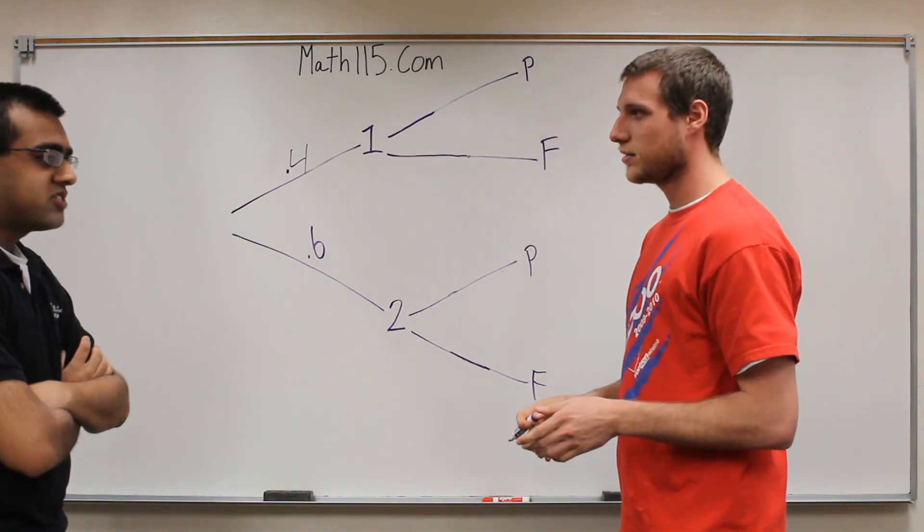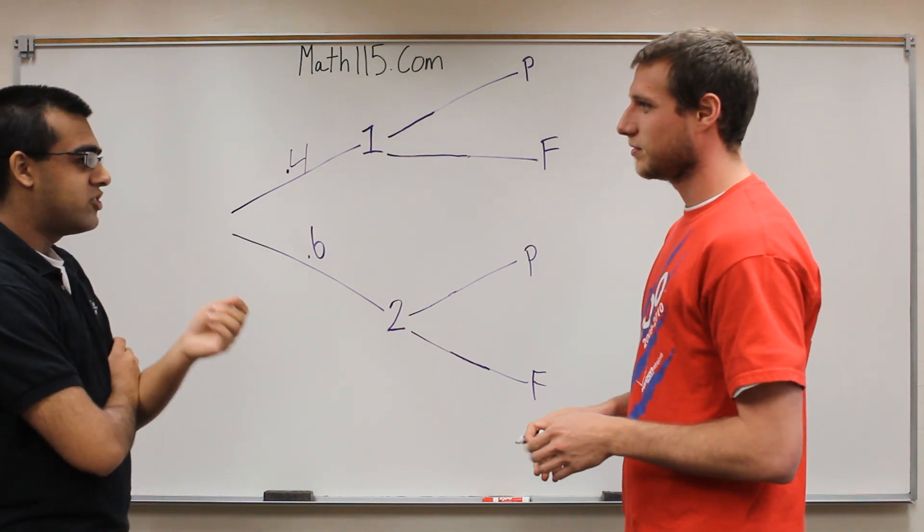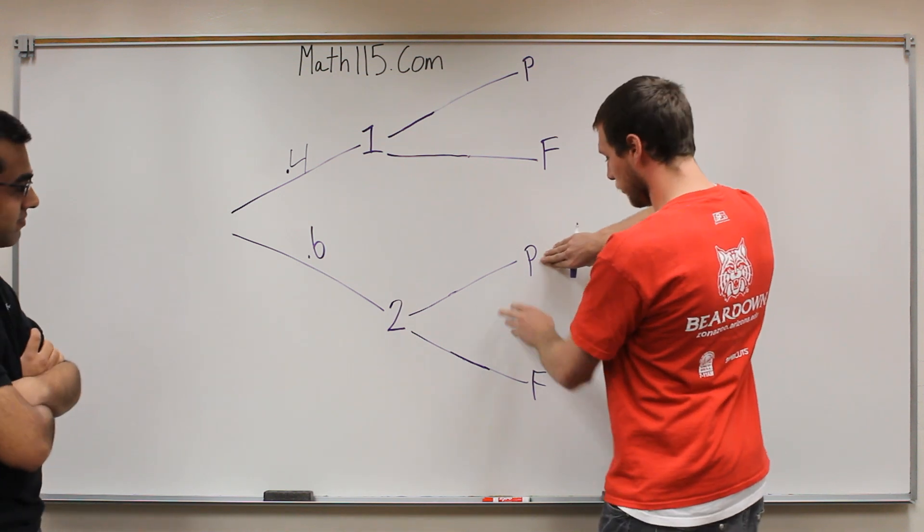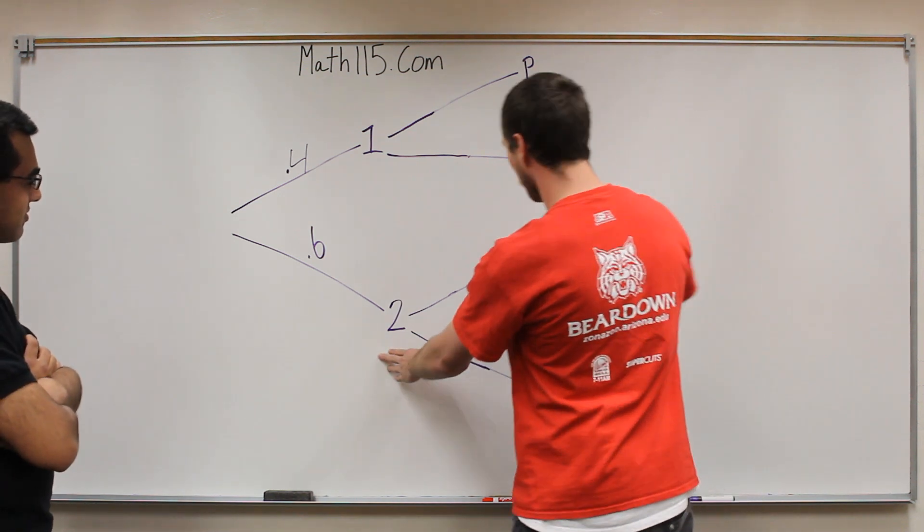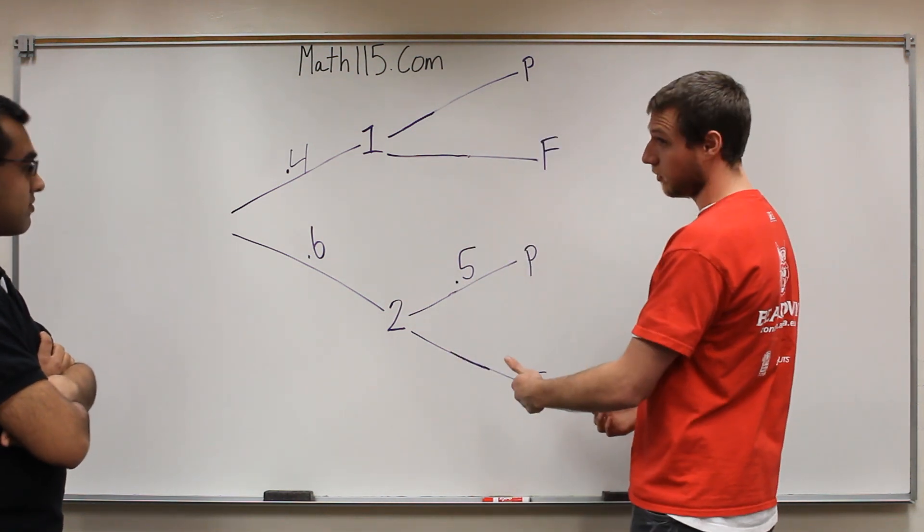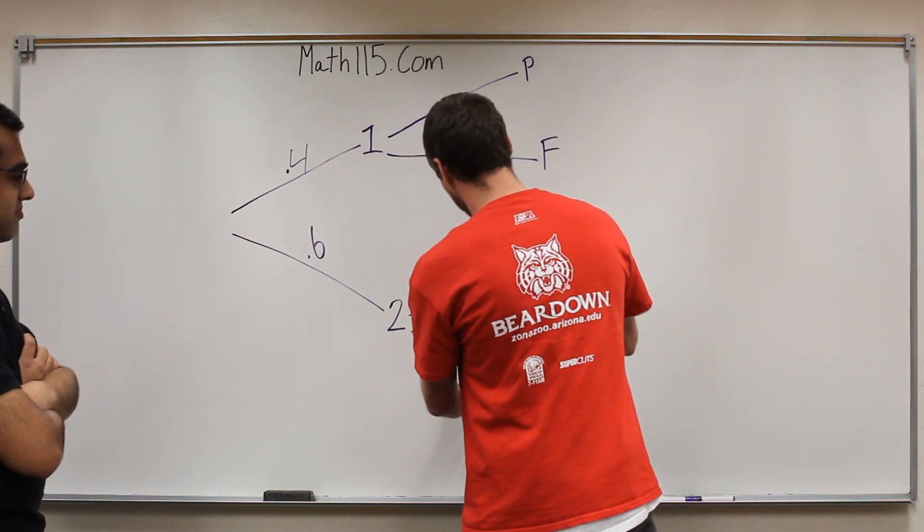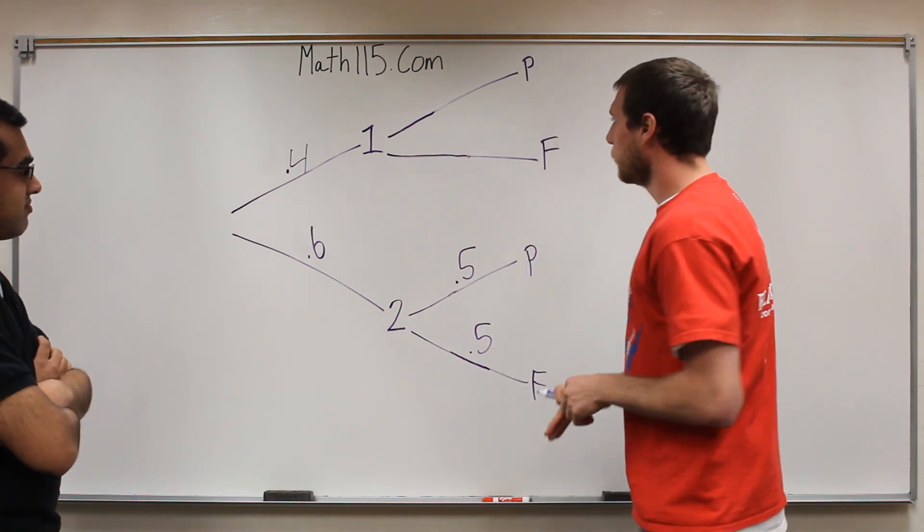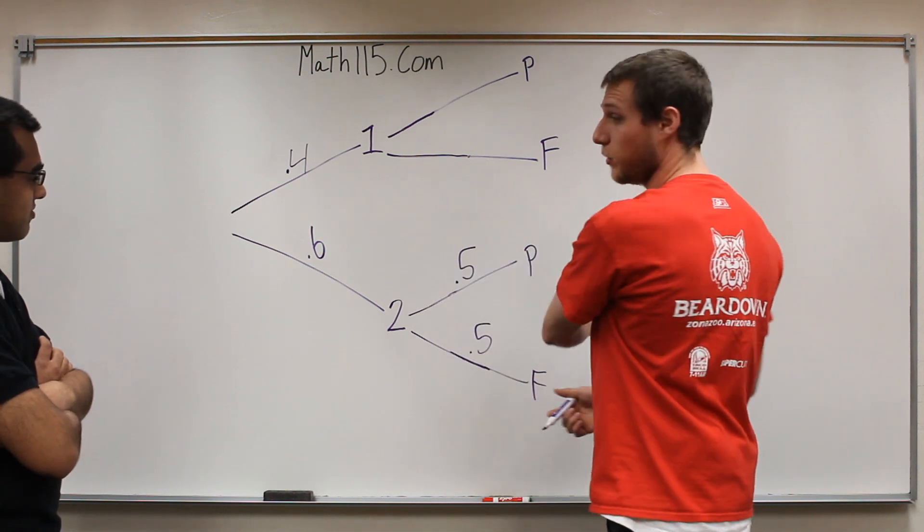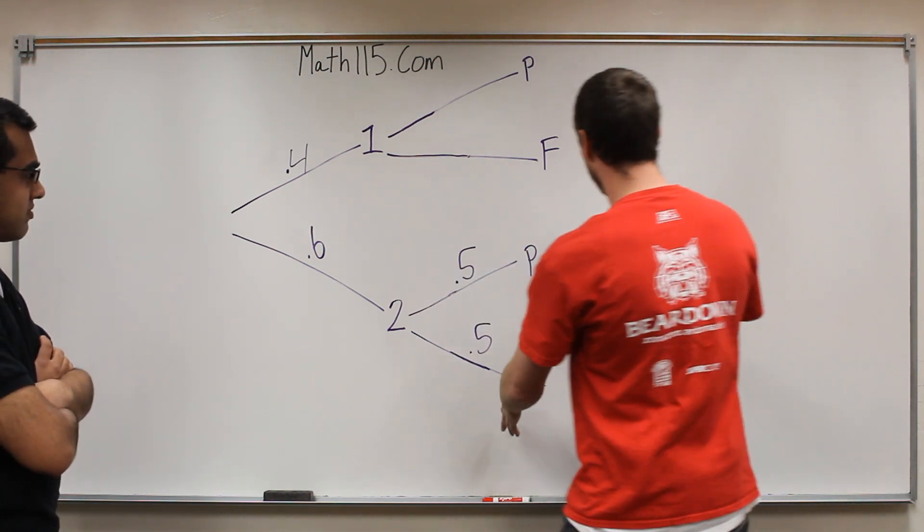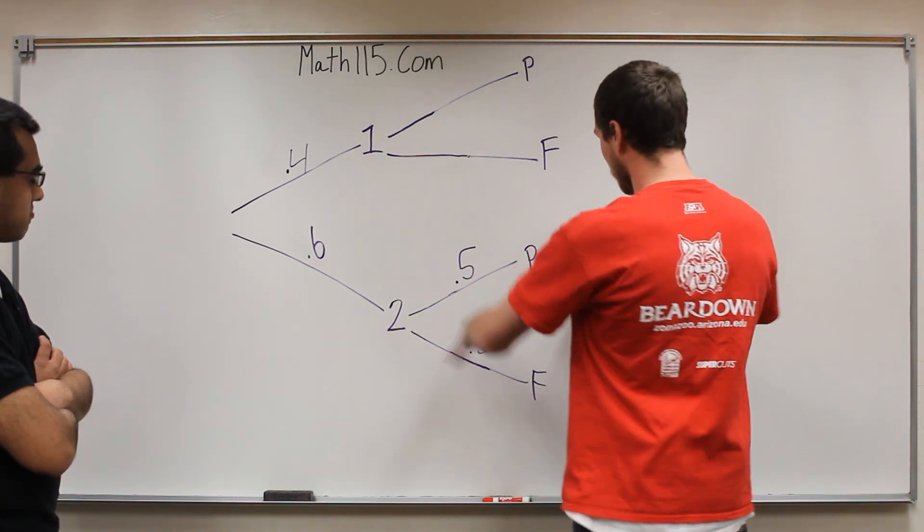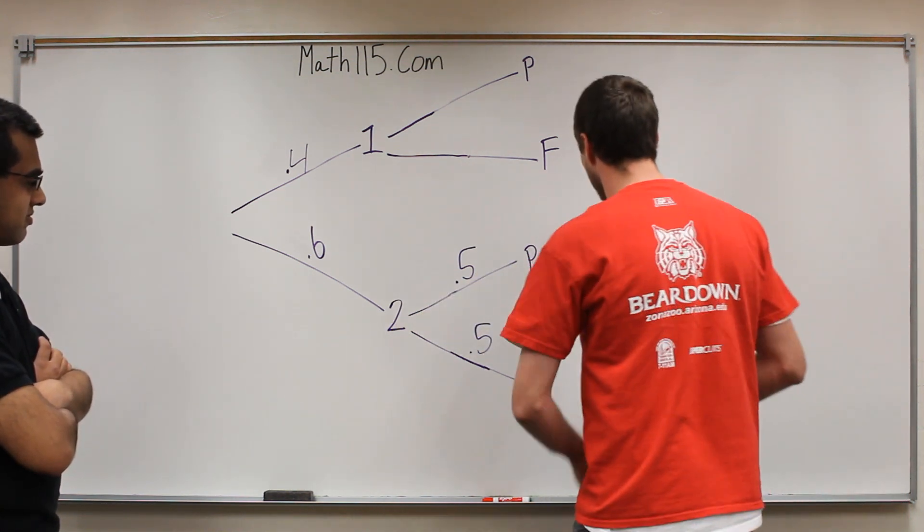Now what else did we know? You said there was 50% of something. There are 50% of students in section 2 will pass. So if we have passing here and failing here, we already know we're in section 2, so it's 50%. That means you're also saying 50% will fail in section 2.